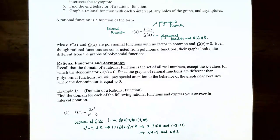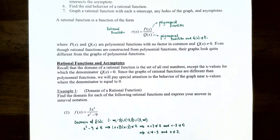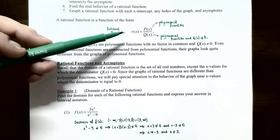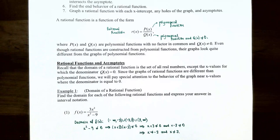So even though rational functions are constructed from polynomial functions in the numerator and denominator, their graphs will actually look quite different from the graphs of polynomial functions. The domain of a rational function is the set of all real numbers except for the x values that make the denominator q of x equal to zero. We must exclude those x values from the domain of r of x, and we'll pay special attention to the behavior of the graph near those values.